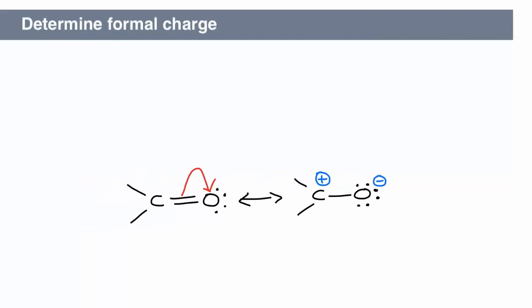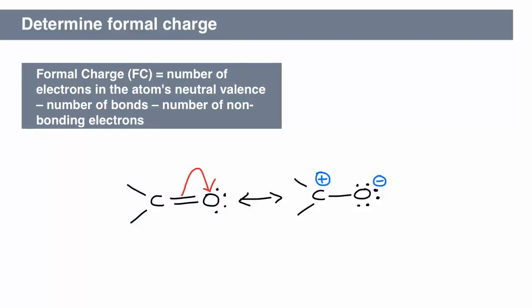Formal charges can be determined in a couple of ways. We can go back to the original formal charge formula. The formal charge on the oxygen on the right is equal to 6, minus 1, minus 6, or negative 1. The analogous calculation for the carbon atom gives a formal charge of plus 1.